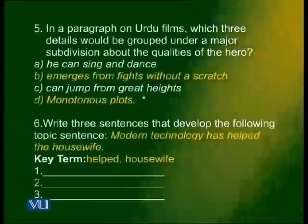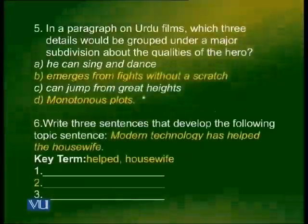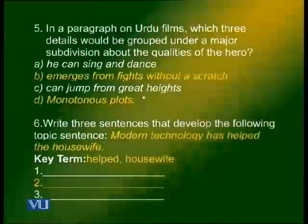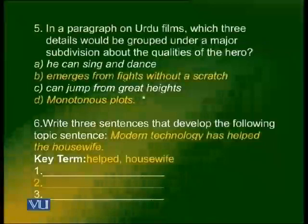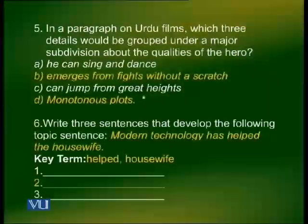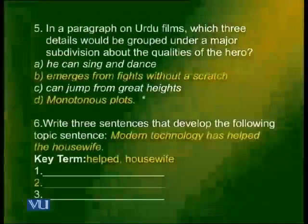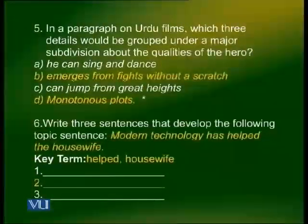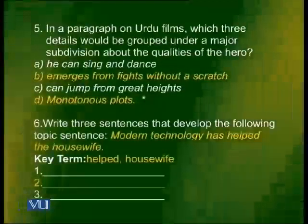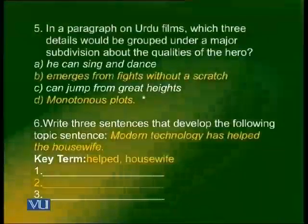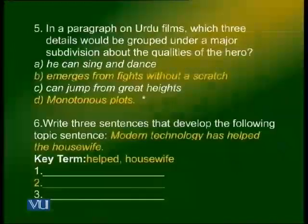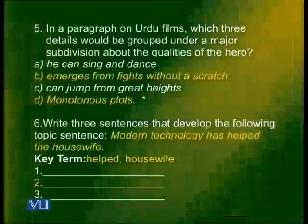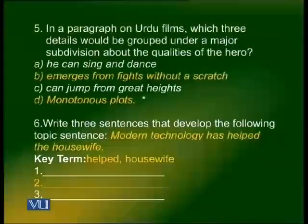Let us look at another example. If you are asked to write a paragraph on Urdu films, which three details would be grouped under a major subdivision about the qualities of a hero in a Pakistani film? The qualities are: A. he can sing and dance, B. he emerges from fights without a scratch, C. he can jump from great heights, and D. Urdu films have monotonous plots. It would be A, B, and C. Detail D — that Urdu films have monotonous plots — would not come under the qualities of the hero.